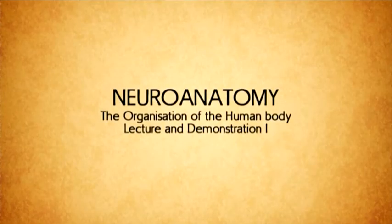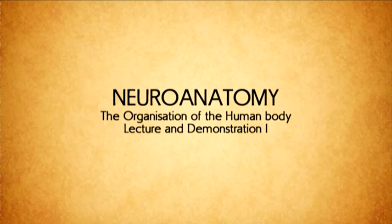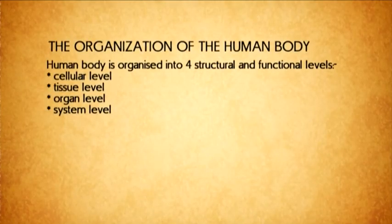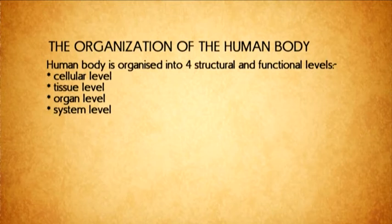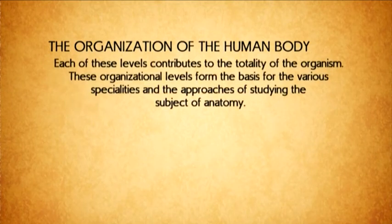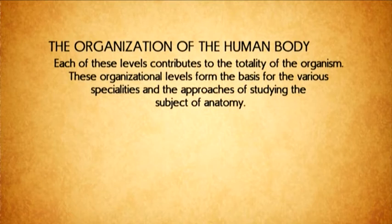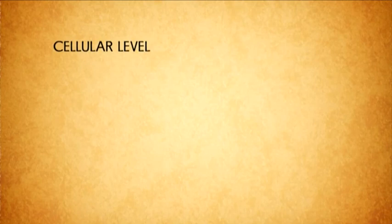I'm giving a series of lectures in neuroanatomy. Before then, we are considering the organization of the human body. The human body is organized into four structural and functional levels: cellular level, tissue level, organ level, and systemic level. Each of these levels contributes to the totality of the organism. These organizational levels form the basis for the various specialties and approaches of studying the subject of anatomy.